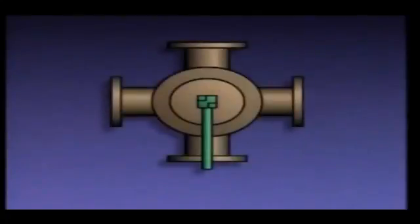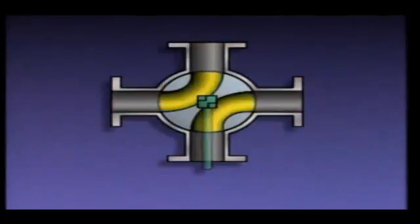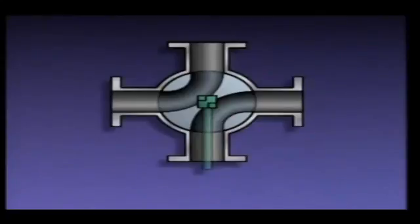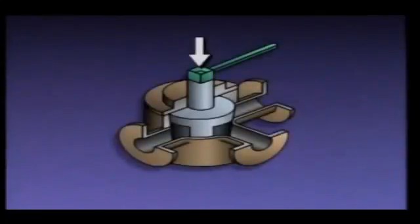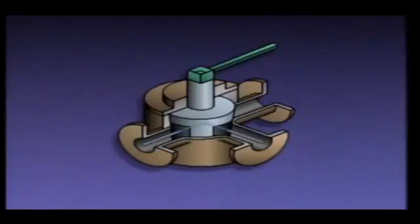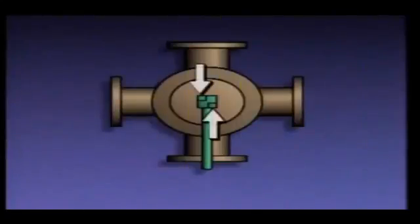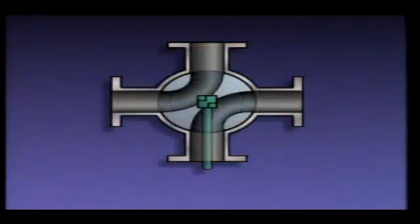Some multi-port plug valves have more than one L-shaped opening. Here is an example of a plug valve with two L-shaped openings, called a four-way valve, commonly used to change flow through a piping system. Multi-port plug valves usually have L-shaped markings on their handles to indicate valve position. Three-way plug valves usually have one L and four-way plug valves usually have two. By comparing the L positions to the piping, the direction of flow can be determined.